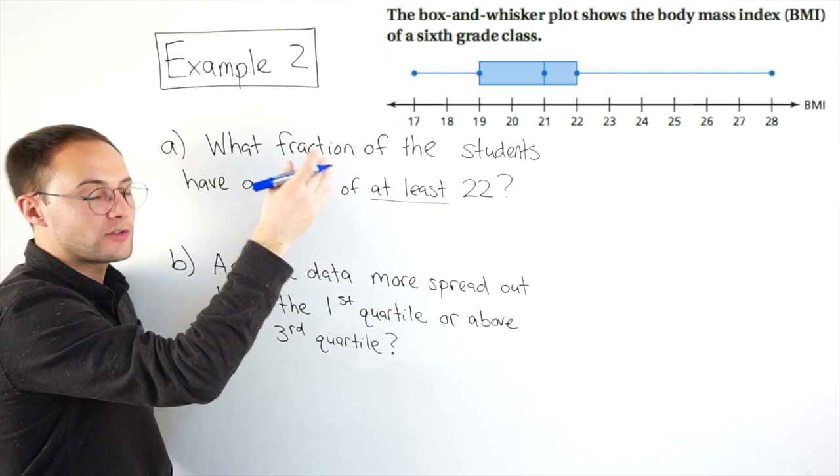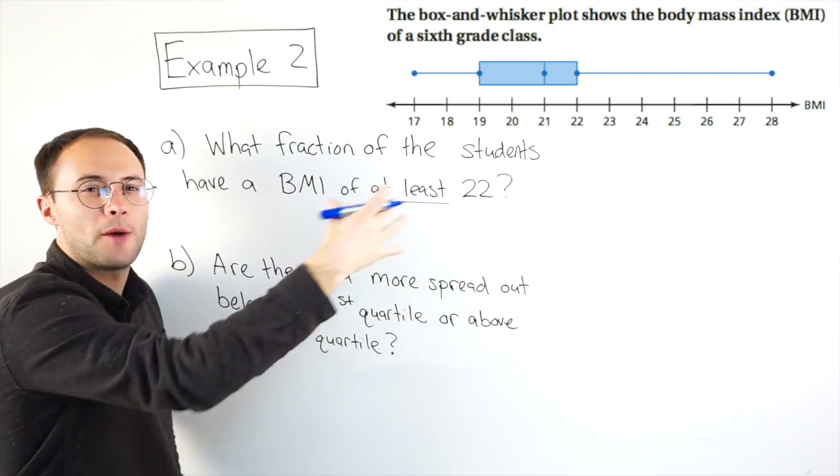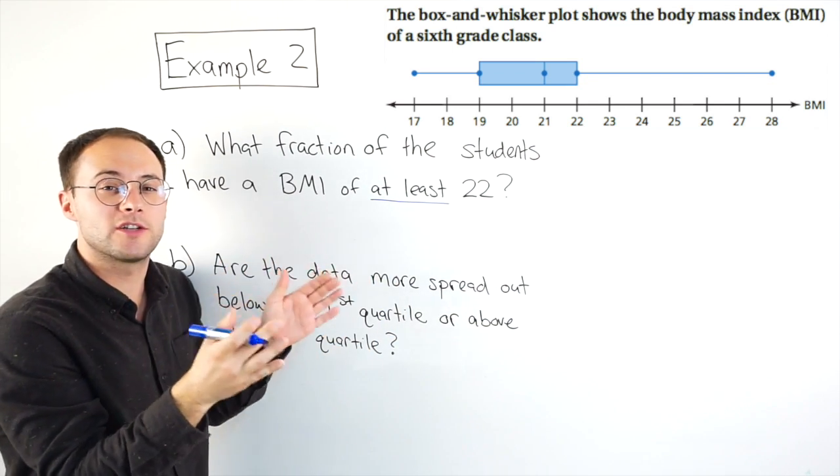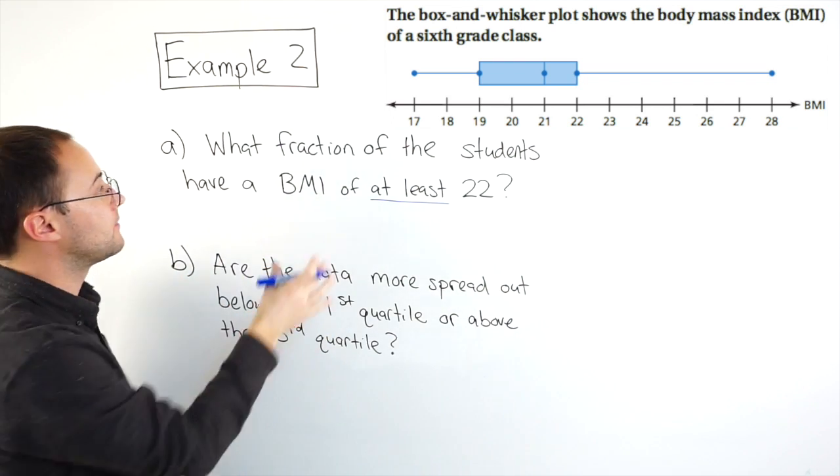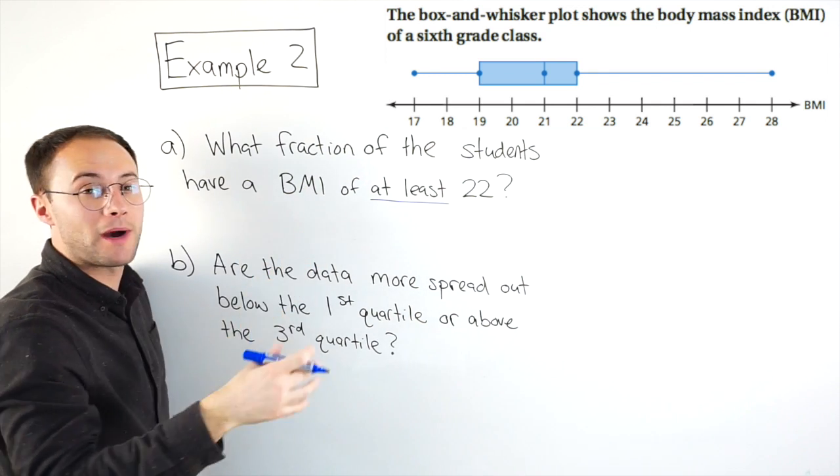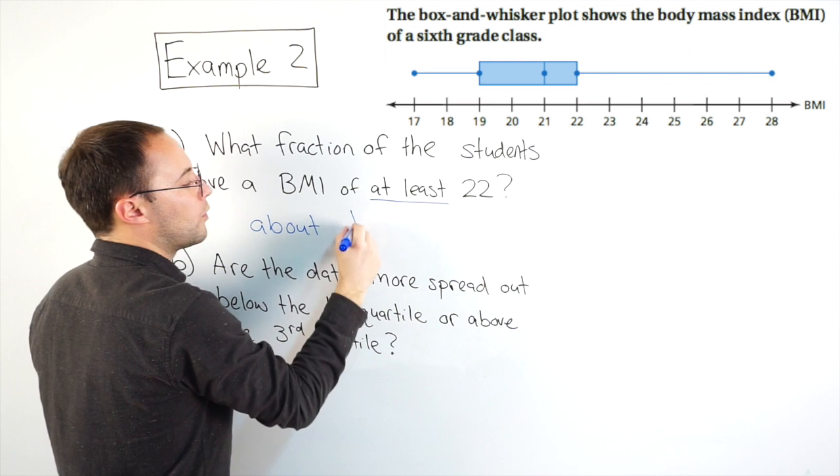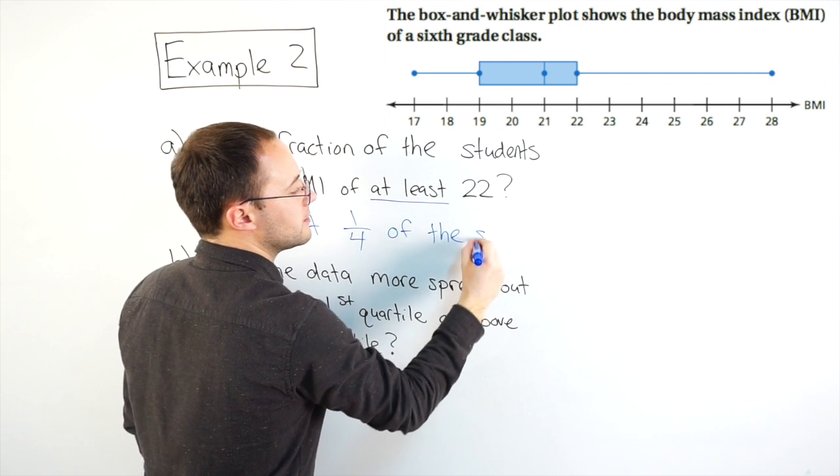Well, greater, 22 or greater is talking about that right whisker, that upper whisker. And remember, we just said those whiskers always represent about one-fourth of the data. So that's our answer. What fraction of the students have a BMI of at least 22? About one-fourth of the students.